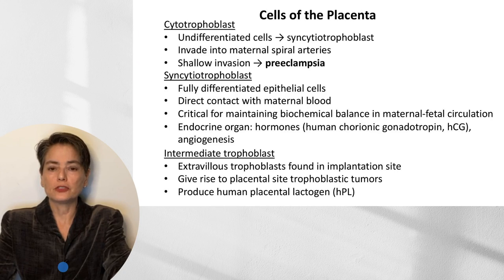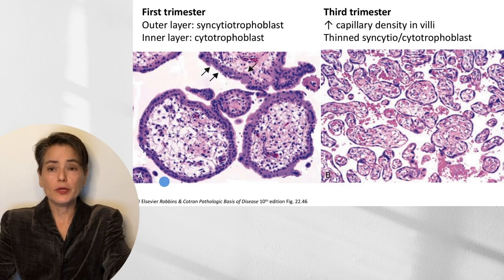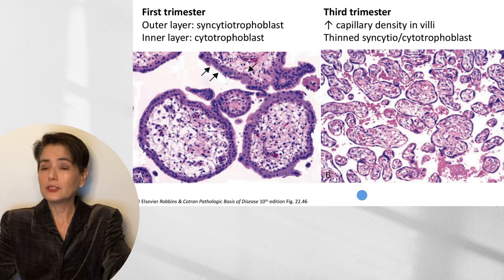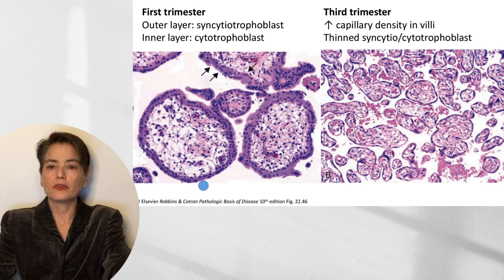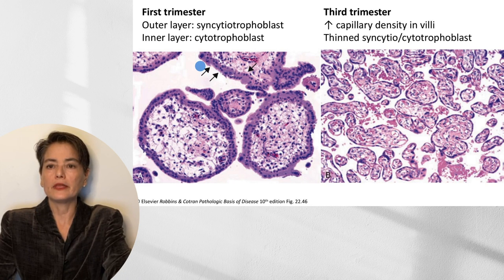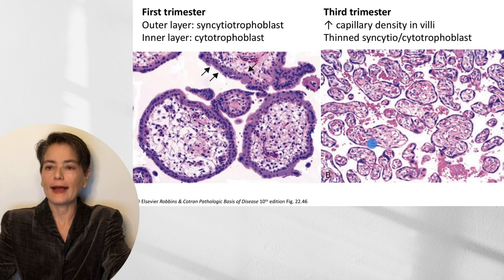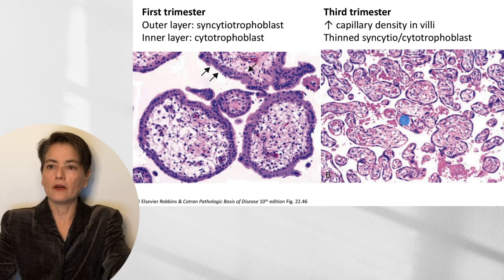Let's take a closer look at these two cell types in the placenta. Here you can see two histologic sections — one on the left is the first trimester, one on the right is the third trimester, taken at the same magnification. Early on we have very large villi with abundant mesenchymal cells. You can see more clearly the division between our syncytiotrophoblasts, which form this outer layer, and our internal cytotrophoblast layer. In the third trimester, we have a proliferation of capillaries and the tissue has become more fibrotic, with the syncytiotrophoblast and cytotrophoblast layer much thinner.